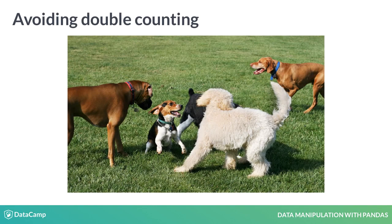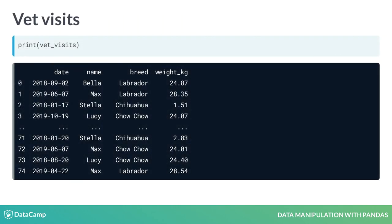Counting dogs is no easy task when they're running around the park — it's hard to keep track of who you have and haven't counted. Here's a data frame that contains vet visits. The vet's office wants to know how many dogs of each breed have visited their office. However, some dogs have been to the vet more than once, like Max and Stella, so we can't just count the number of each breed in the breed column.